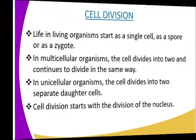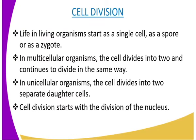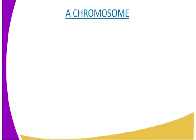Having introduced reproduction in plants and animals, we can now look at cell division, because cell division is what involves reproduction. Life in living organisms starts as a single cell, as a spore or as a zygote. In multicellular organisms the cell divides into two and continues to divide. In unicellular organisms such as the amoeba, the cell divides into two separate daughter cells. Cell division starts with division of the nucleus — the chromosomes — and the cytoplasm.